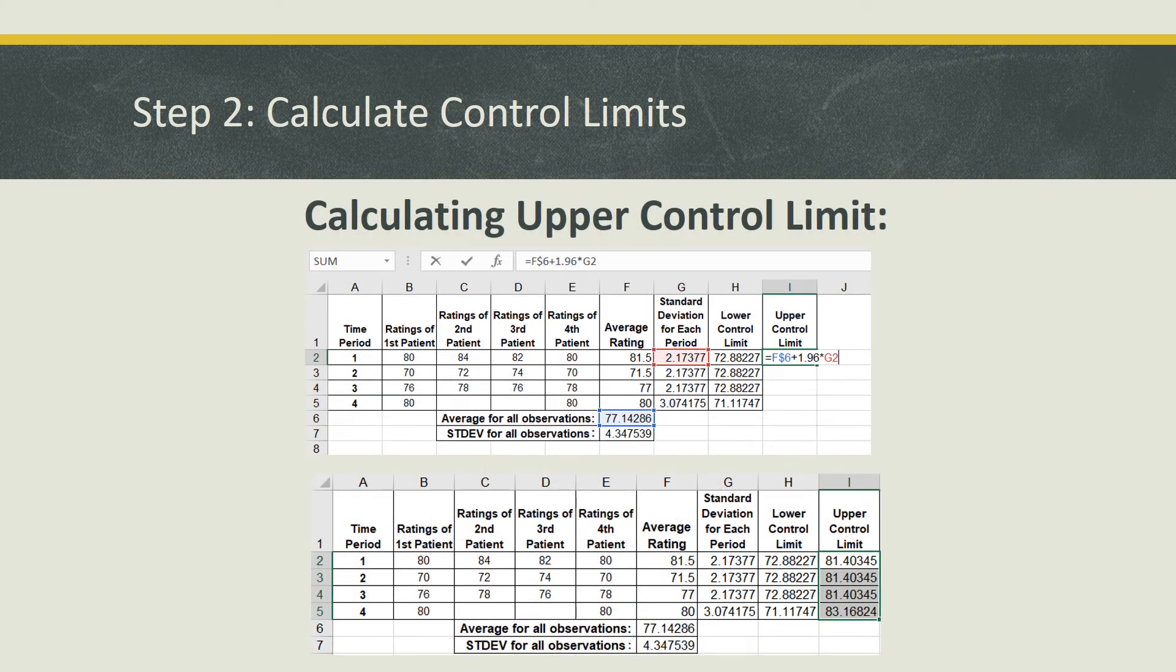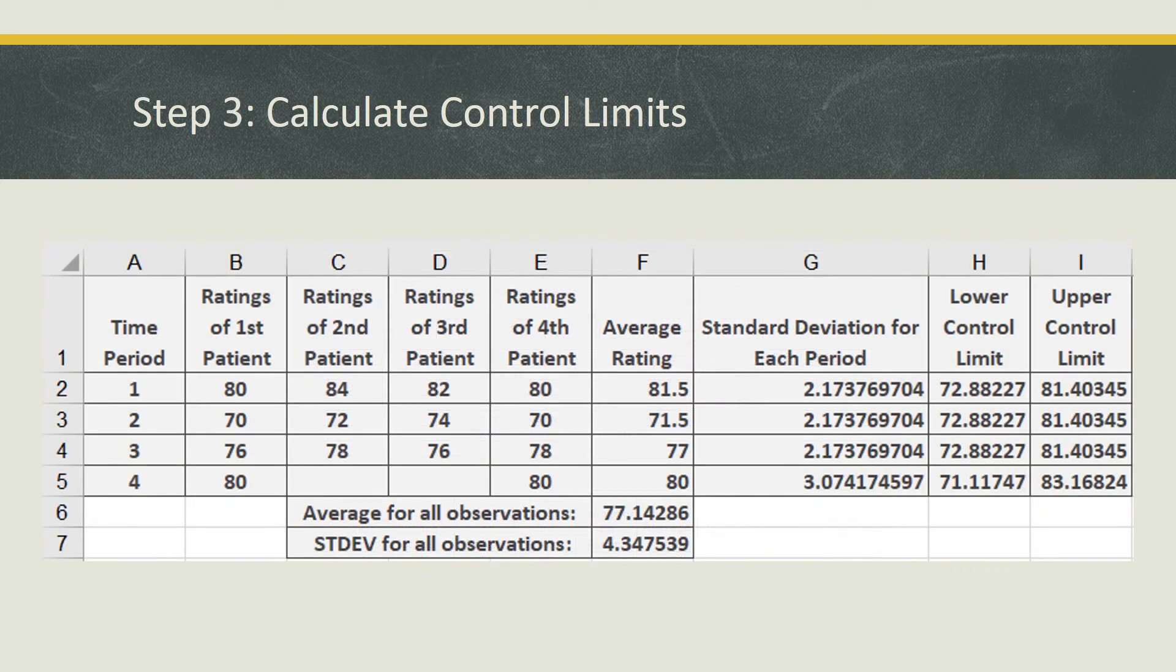You can calculate the upper control limit almost the exact same way, but instead of subtracting 1.96 T value times the standard deviation for each period, you'll be adding it. And once you're done, your spreadsheet should look like this with the time period, ratings of the first to the fourth patient, average ratings for each time period, standard deviation for each period, lower and upper control limits, as well as the average and standard deviation for all observations.